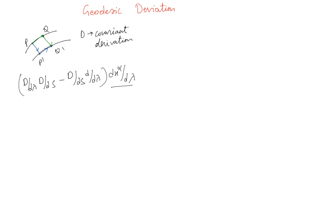We are parallel transporting the tangent vector dx^α/dλ, where λ is the parameter parameterizing this geodesic. The term d/dλ of dx^α/dλ is zero because that's the geodesic equation, and PQ satisfies the geodesic equation. So that term vanishes.